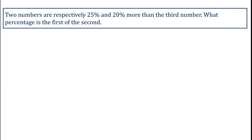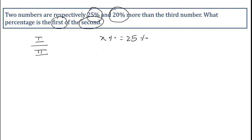Two numbers are respectively 25 percent and 20 percent more than a third number. What percentage is the first of the second? We need to find what percentage the first is of the second, so put the first in the numerator and the second in the denominator. Here x percent equals 25 percent and y percent equals 20 percent. Always consider the third number to be equal to 100.